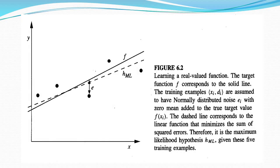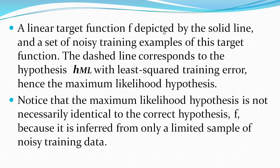Here we are giving the graphical notation for this. The learning algorithm with the real valued function f corresponds to the solid line, which comes from normally distributed training examples. The dashed line corresponds to the linear function which minimizes the sum of squared errors — that is why the dashed line hypothesis is called the maximum likelihood hypothesis. The solid line represents the noise-free target value, and the dashed line represents the hypothesis with the least squared training error.